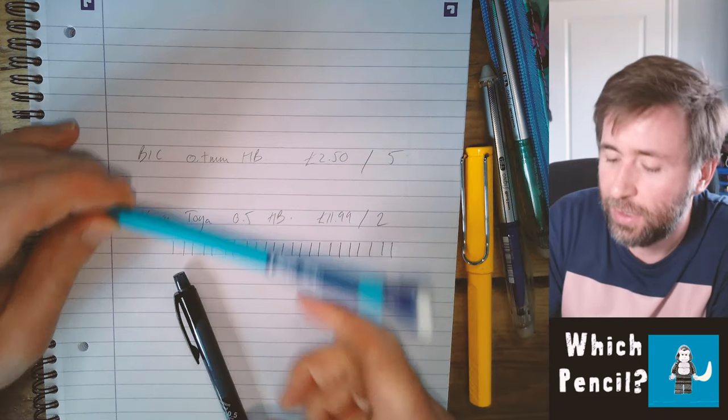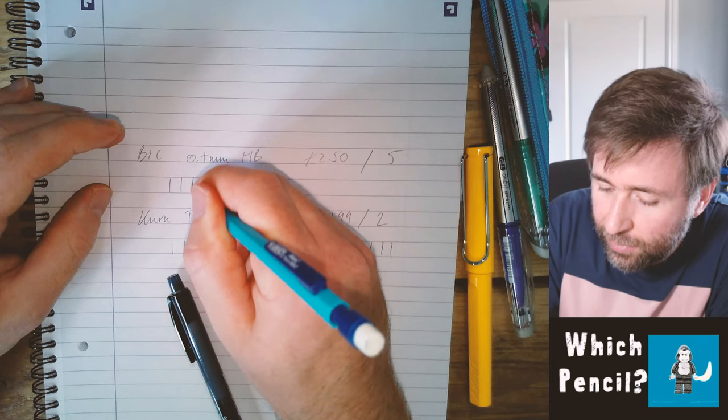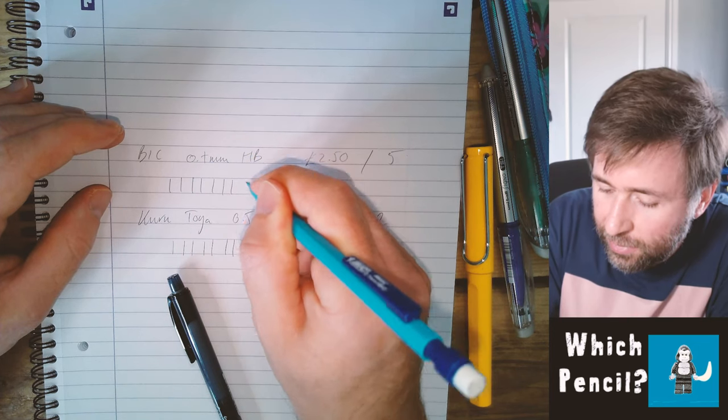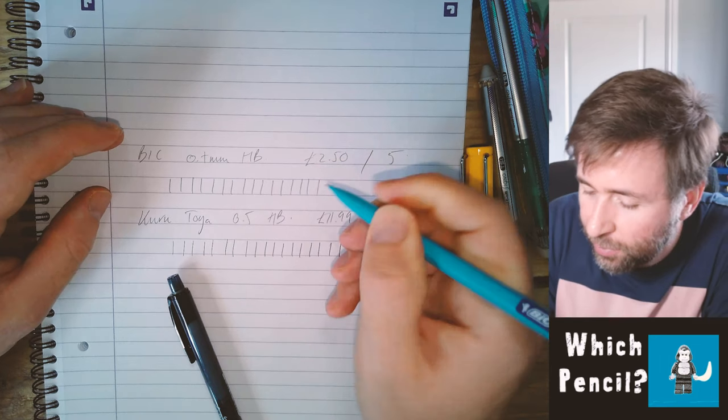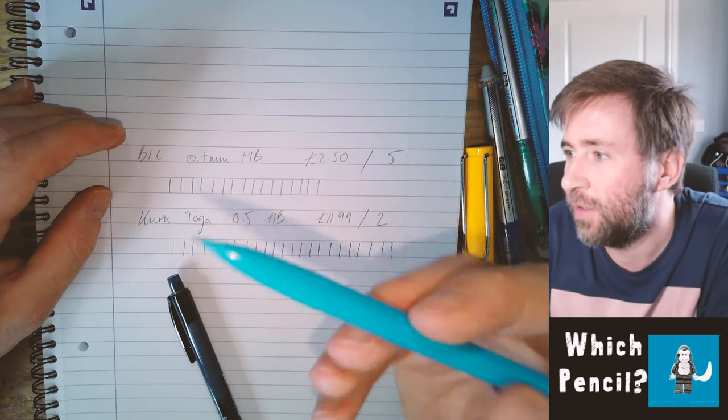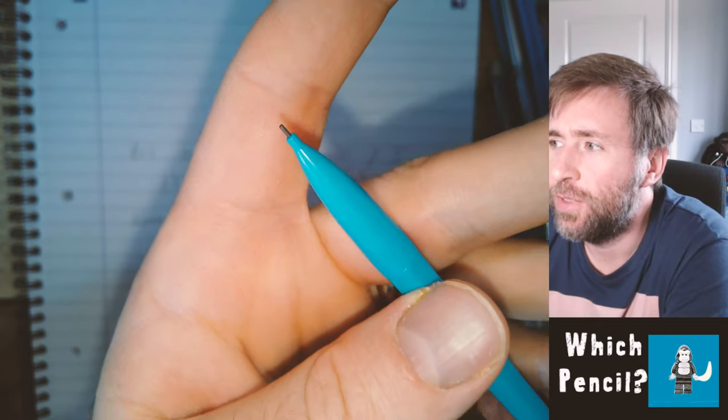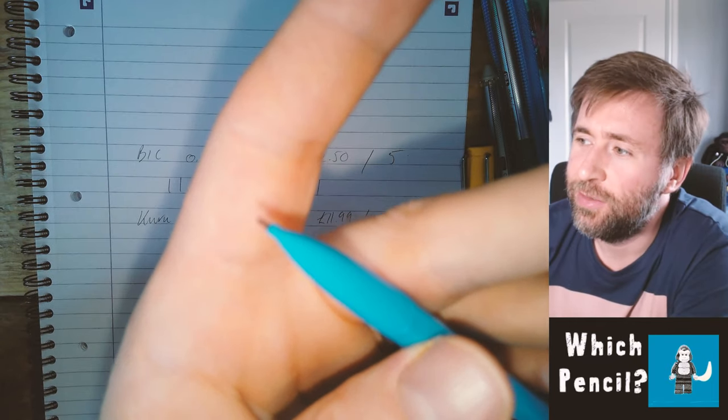Like that. Whereas when I use the same thing with the Bic, the lines actually get thicker as I go. Because what I'm doing is I'm wearing out the pencil lead and making that slight chiseled edge, which means that you get the different sides.